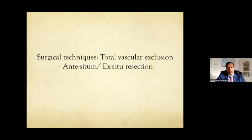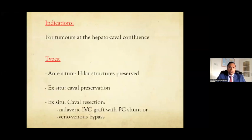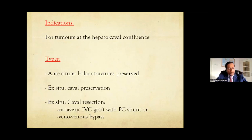High-end surgical procedures remain feasible for colorectal liver metastases. Total vascular exclusion — either ante-situm resection or ex-situ resection — is indicated for tumors at the confluence of hepatic veins and the cava. Ante-situm resection preserves the hilar structures (inflow) but detaches the outflow, resects the tumor, then reconstructs. Ex-situ means taking the liver out entirely — total vascular exclusion, with or without CAVA preservation depending on involvement, then resecting tumor on the back bench and reimplanting like auto-transplantation.